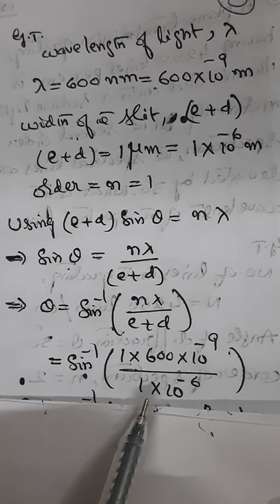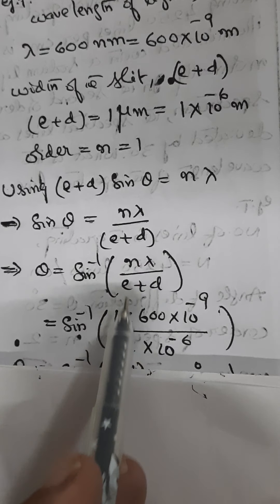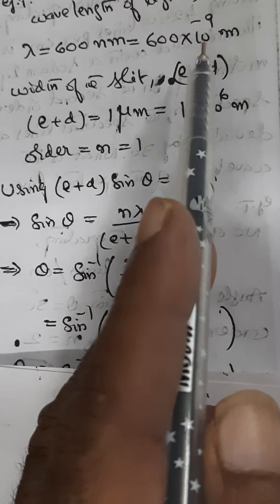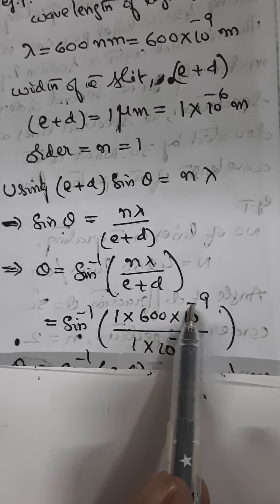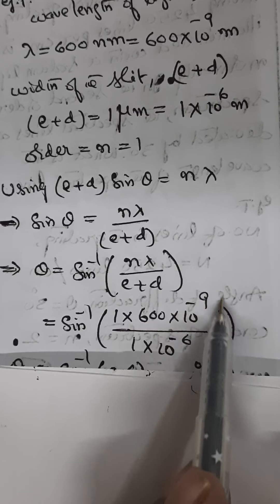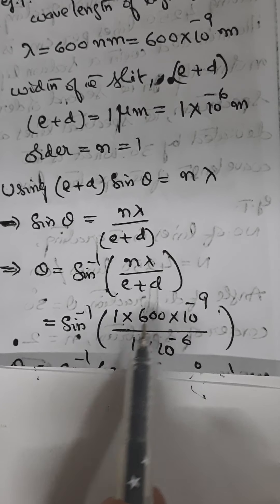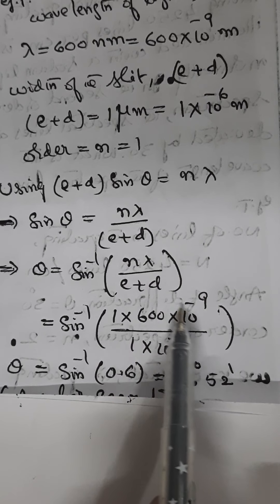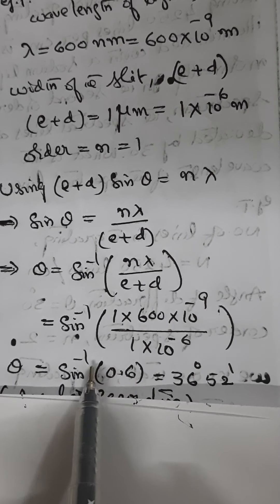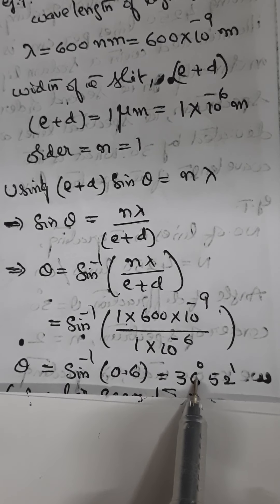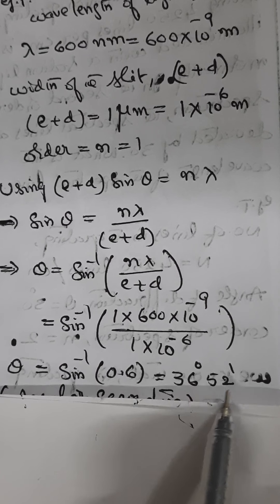Substituting the values: θ = sin⁻¹ of [1 × 600 × 10⁻⁹ divided by 1 × 10⁻⁶]. When 10⁻⁶ comes up to the numerator, 10⁻⁹ divided by 10⁻⁶ gives 10⁻³. With 600, simplifying gives 0.6. So theta will be sin⁻¹(0.6). Using natural trigonometric tables, sin⁻¹(0.6) equals 36 degrees 52 minutes. Therefore, the angular separation is 36 degrees 52 minutes.